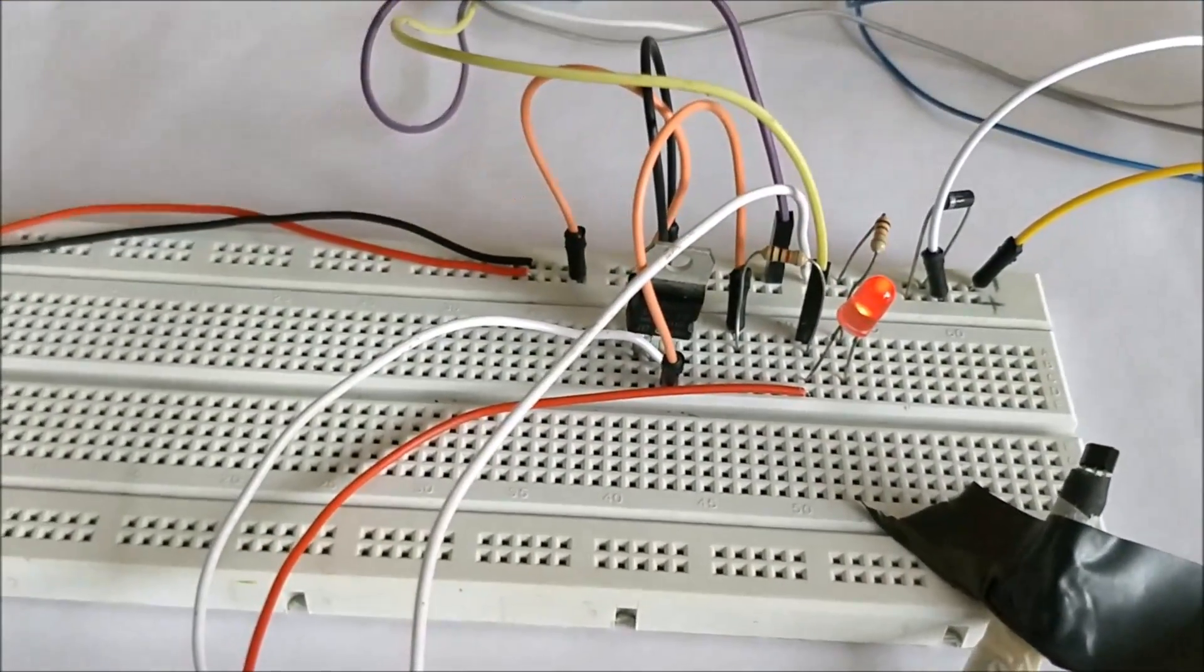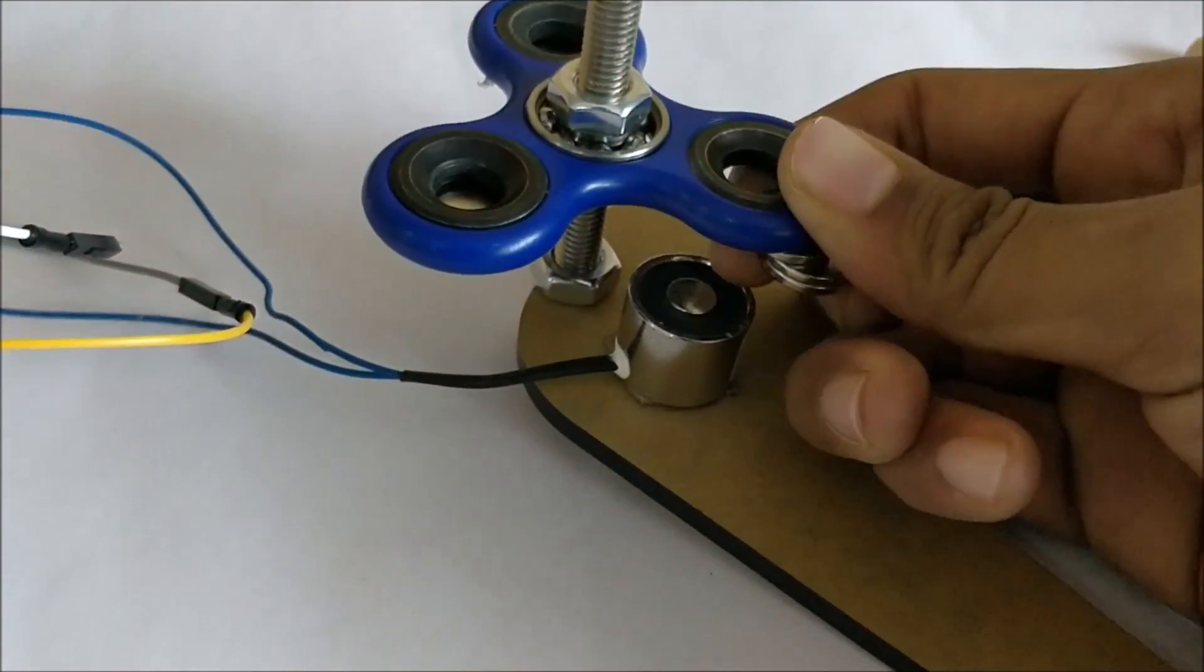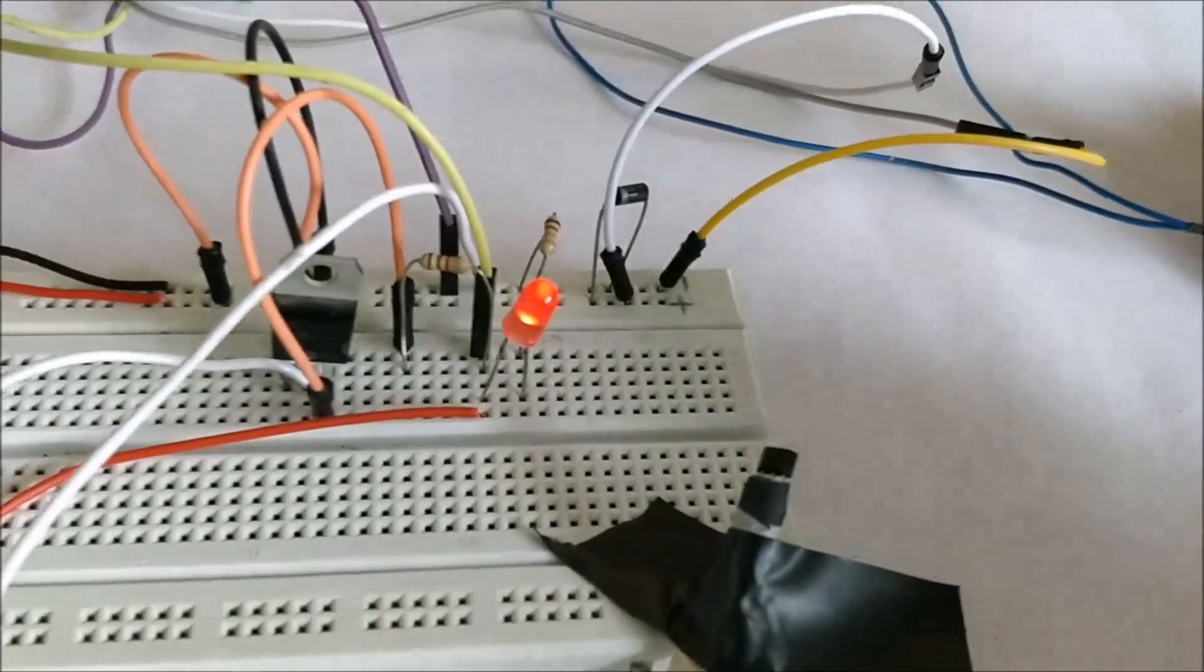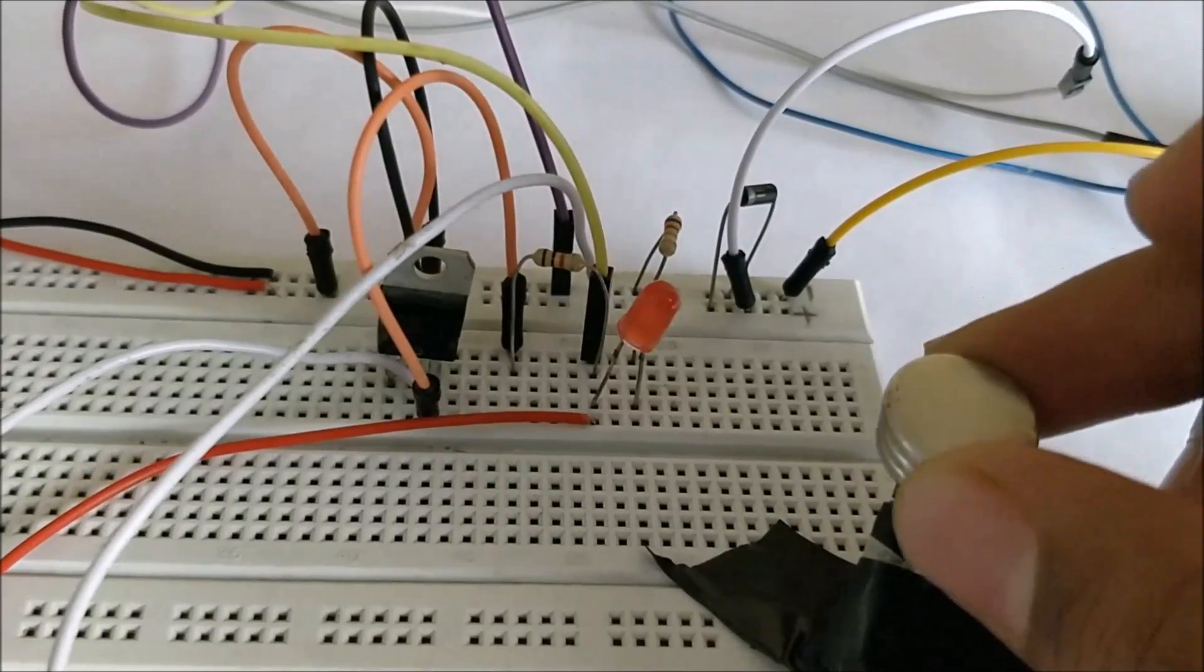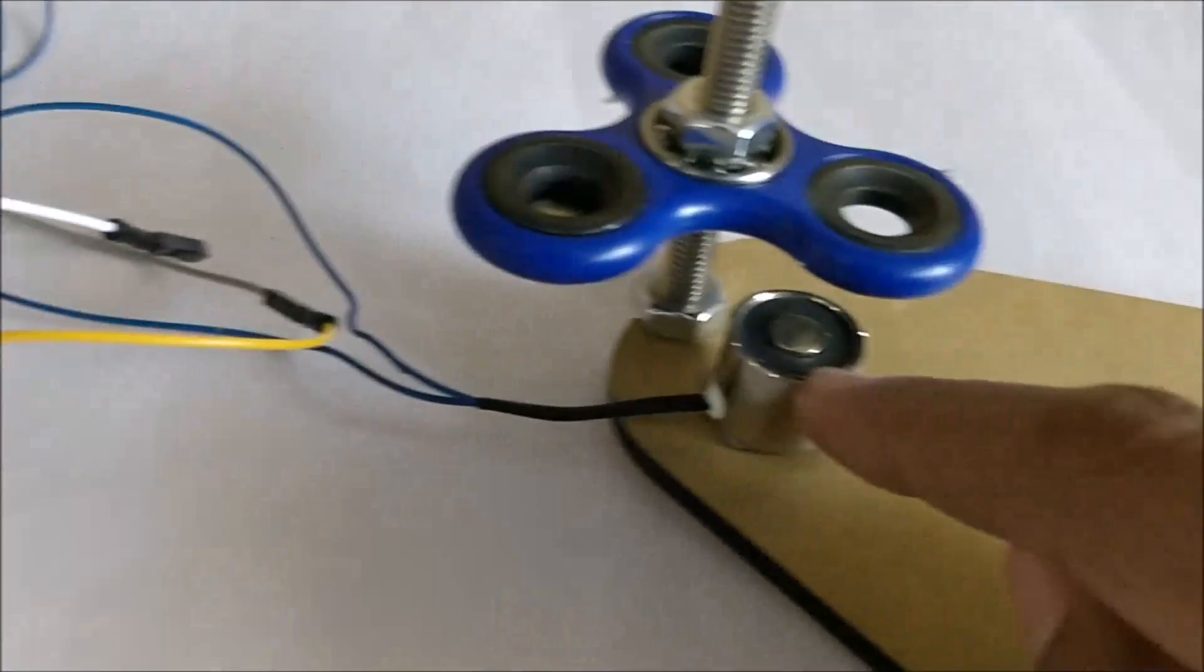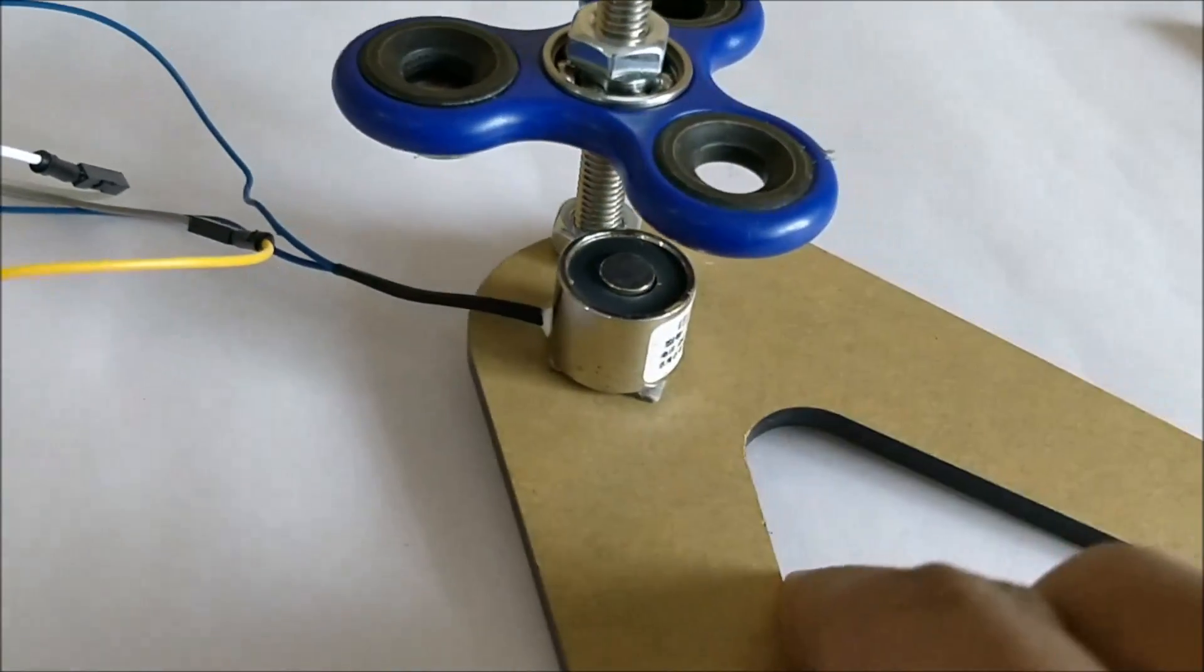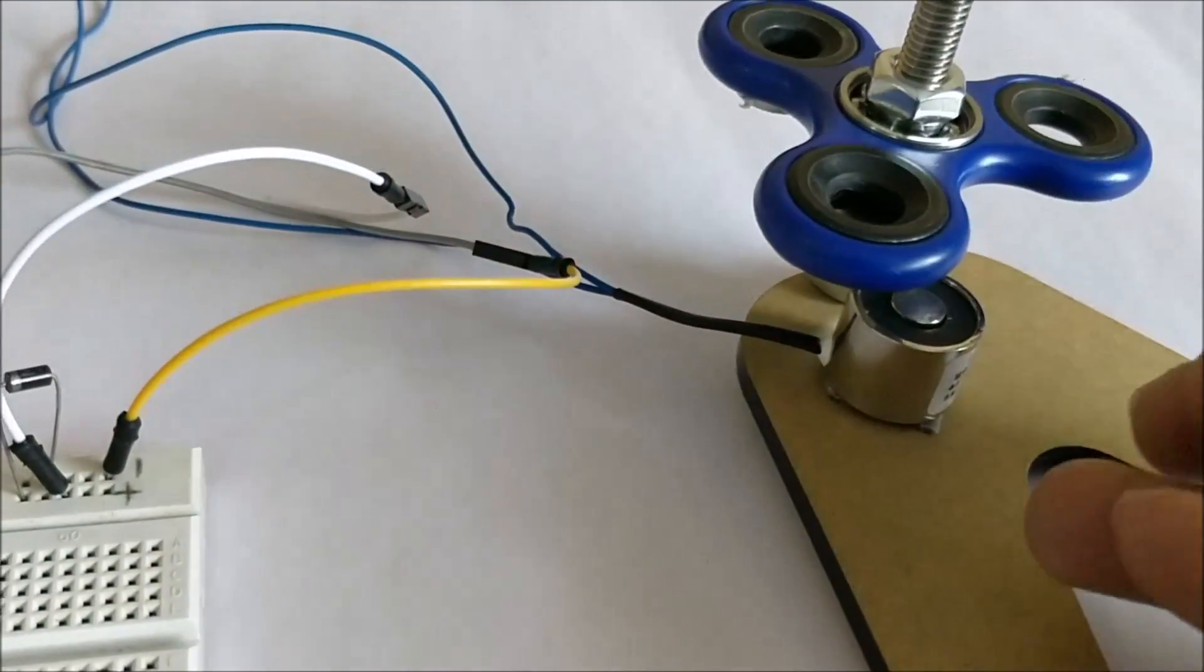And when there is no magnet detected, it will just stay high. Let me remove the magnet from this fidget spinner. And when it detects a magnet, it will go low. So every time it detects a magnet, this will go low and it will activate this electromagnet over here. So it will keep on repelling these magnets which were stuck underneath it.